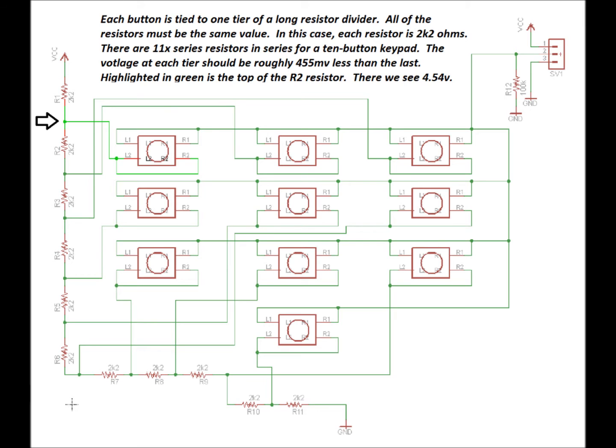But as you can see, every button has a secondary side that's connected to one of the resistors in the voltage divider. And that's going to give us a very specific voltage that will be connected to the output when we press a button.